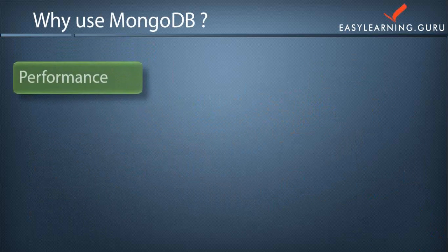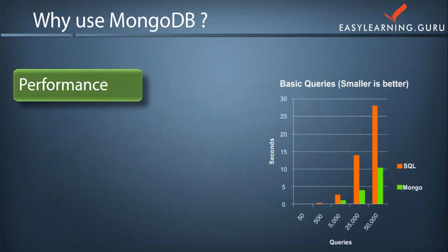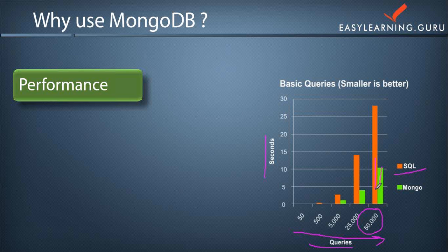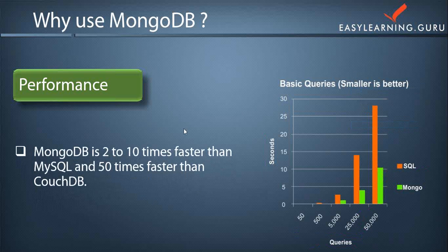The next important feature is high performance. As you can see in the diagram, MongoDB performs better in terms of queries per second compared to SQL. As the number of queries increases, SQL takes longer to process those queries compared to MongoDB. Various factors contribute to this high performance: MongoDB provides embedding of documents, avoids the concept of joins, and provides indexing of data. MongoDB is 2 to 10 times faster than MySQL and 50 times faster than CouchDB.